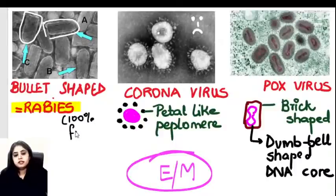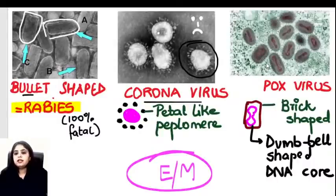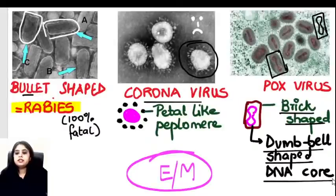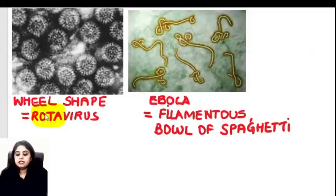Rabies has a 100% fatality rate. Pox virus looks like a box or brick with a dumbbell-shaped DNA core — remember 'pox is a box with a dumbbell inside.' Rotavirus looks like a rotating wheel — rota = rotating wheel. These viral shapes are important image-based questions seen in electron microscopy photographs.